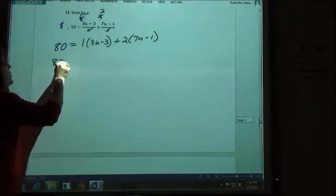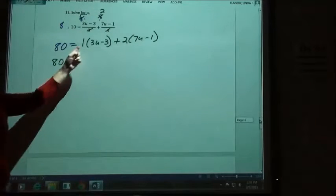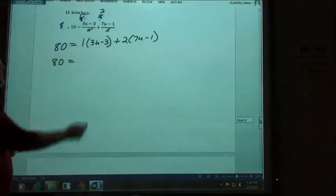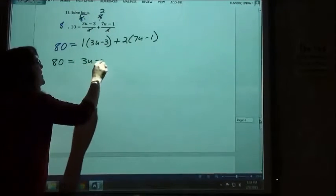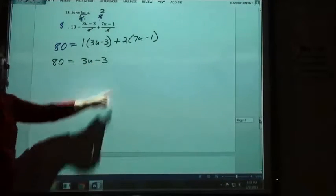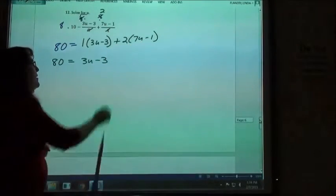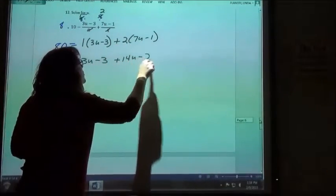So 80 is going to equal, when I take this times 1, I'm not going to change much there, right? I still get 3u minus 3. Here I'm going to multiply by 2. So plus 14u minus 2.